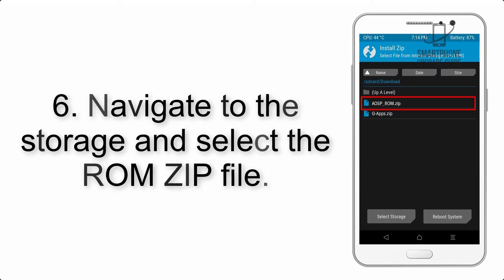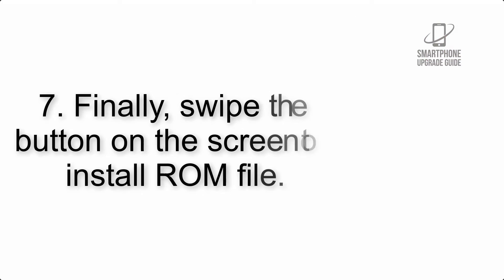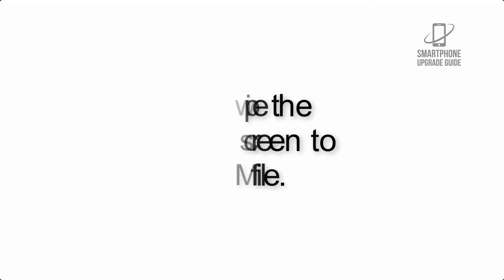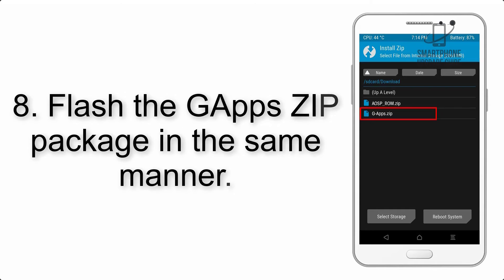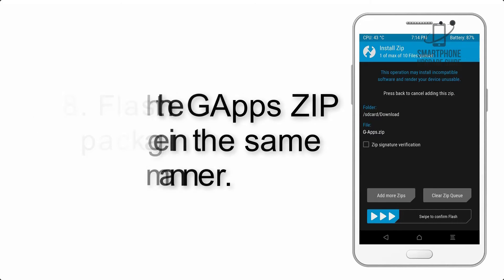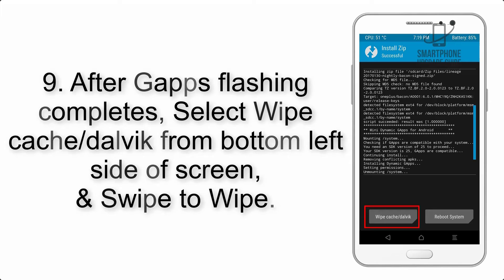Step 6: Navigate to the storage and select the ROM zip file. Step 7: Swipe the button on the screen to install the ROM file. Step 8: Flash the GApps zip package in the same manner.